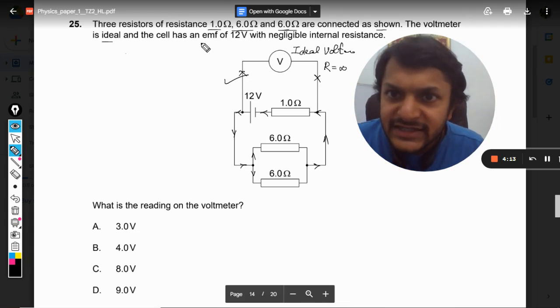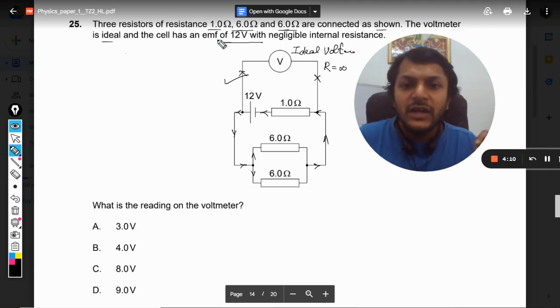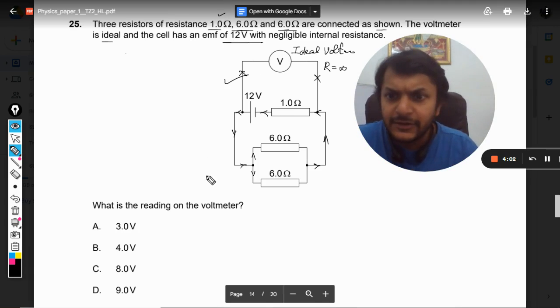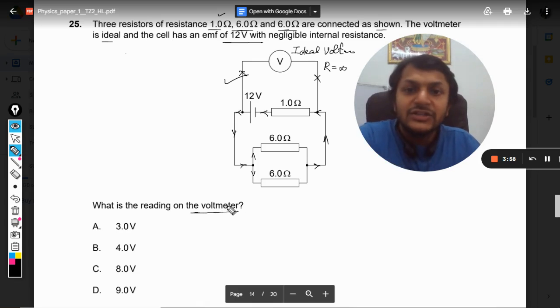The cell has the EMF of 12 volts with negligible internal resistance, but it is given 1 ohm. Okay, anyways, it is the external, so internal resistance is negligible. Fine. What is the reading of the voltmeter?